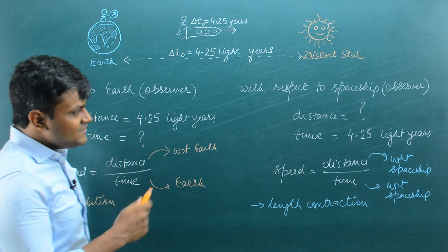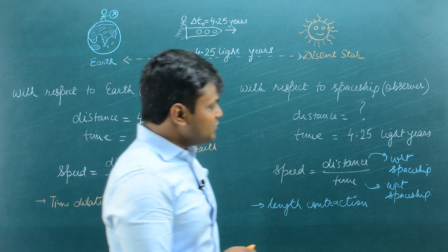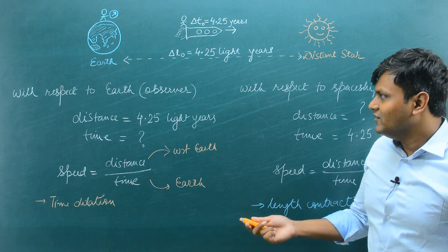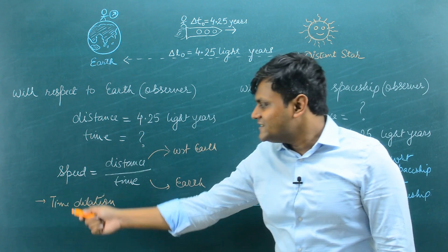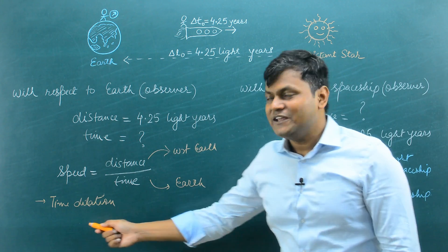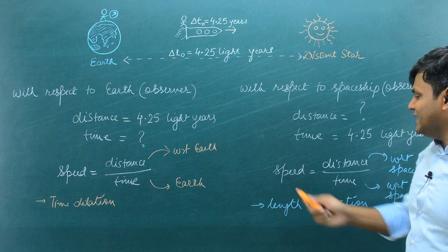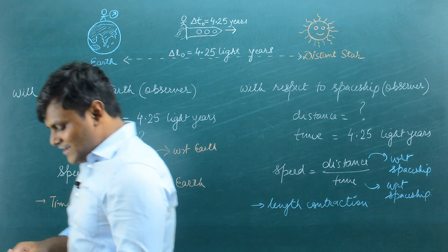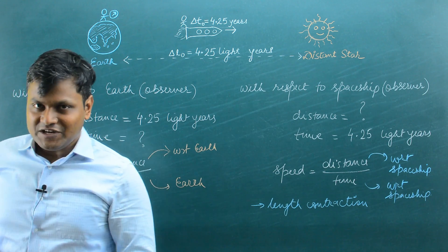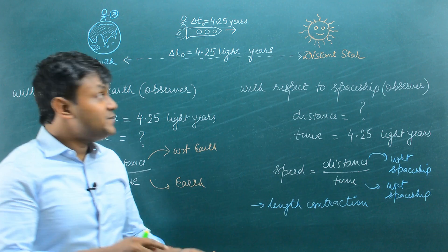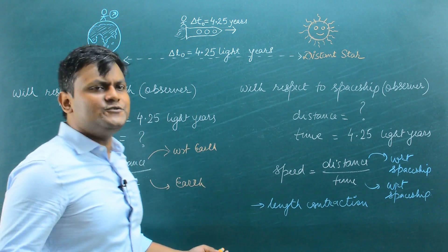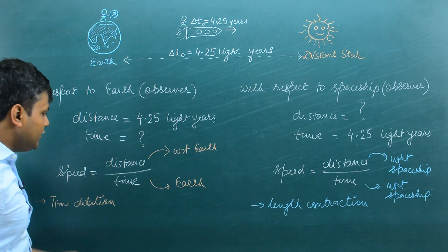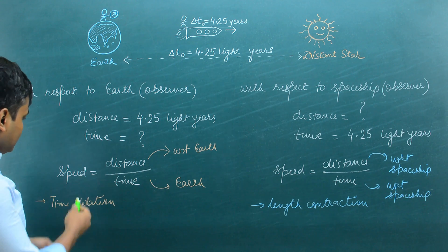Can you see the difference in both these two approaches? The only difference is the observer. For Earth, time dilation is happening. For the spaceship, length contraction is happening. So I can calculate the speed of the spaceship with respect to either observer — just plug in the values.